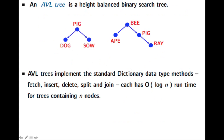An AVL tree is simply a height-balanced binary search tree. We put keys into the tree in the regular order where smaller elements go to the left side and larger elements go to the right side, but we also keep it height-balanced. That makes it possible to do fetch, insert, delete, split, and join all in O(log n) time.